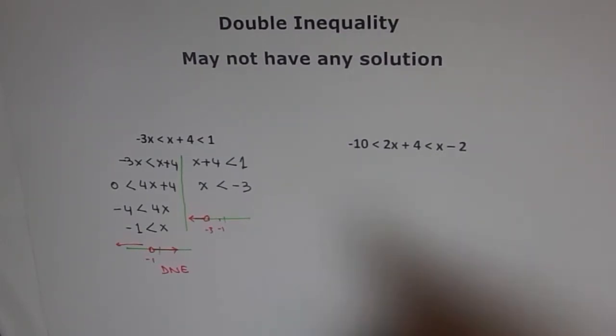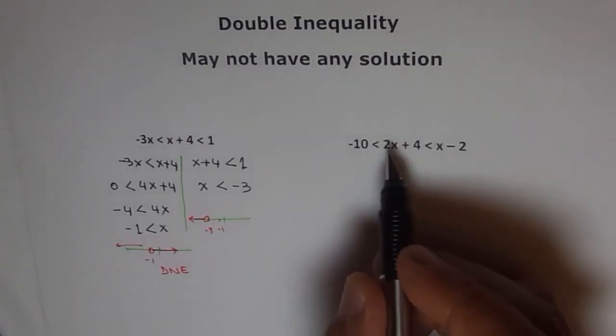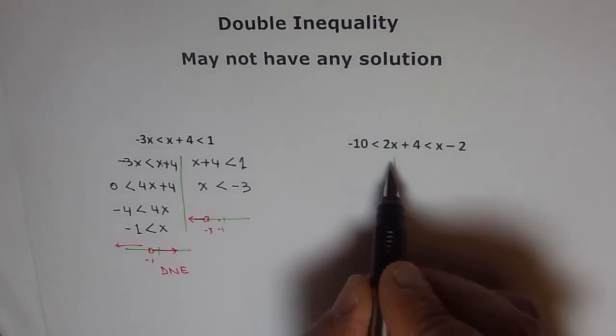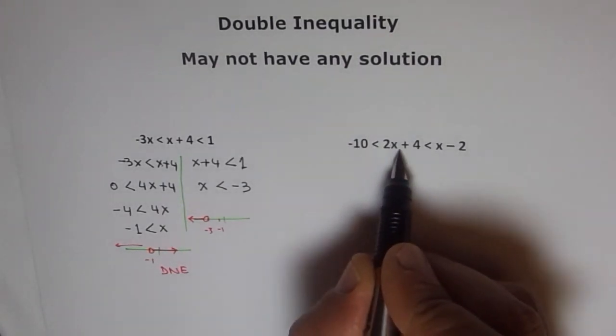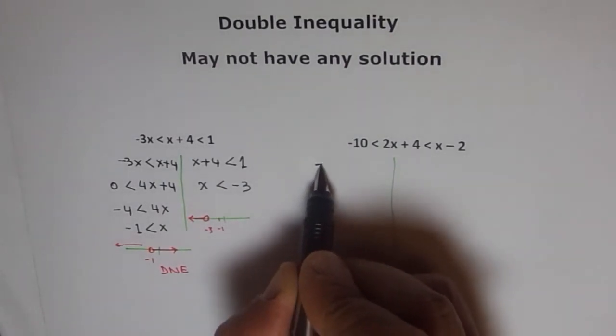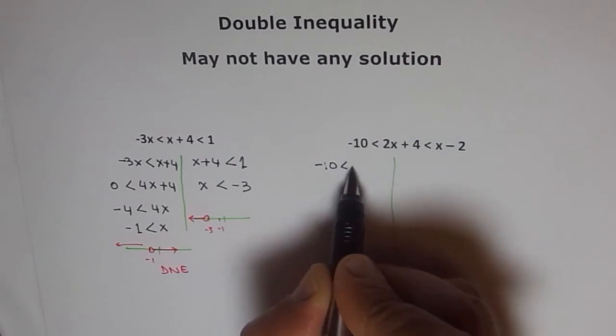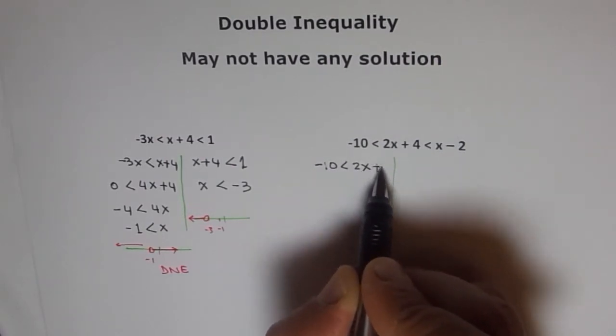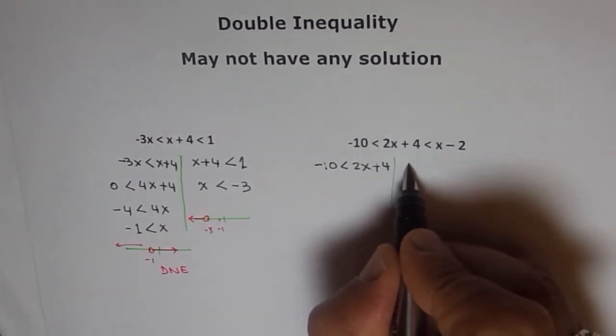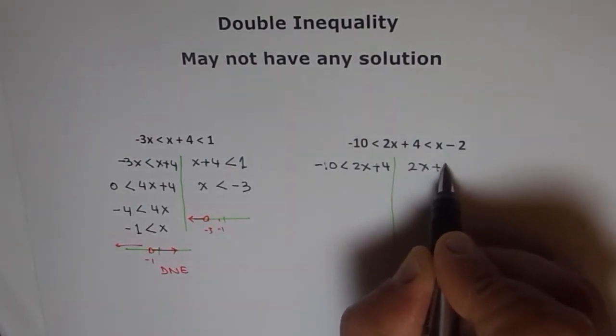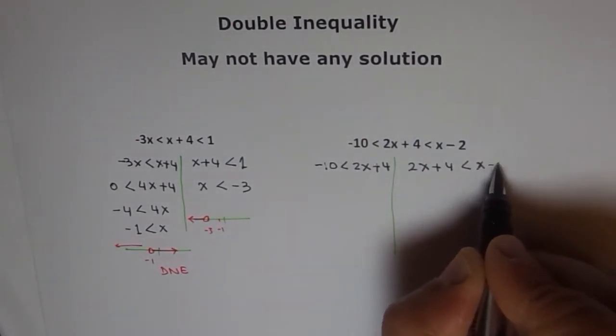Same way, we'll split it into 2 and see if we do have a solution here. So what are we going to do? We are going to write in this fashion. So we say minus 10 less than 2x plus 4. And on this side, we'll solve for 2x plus 4 is less than x minus 2.